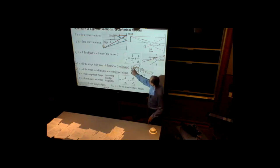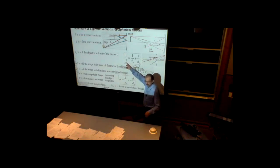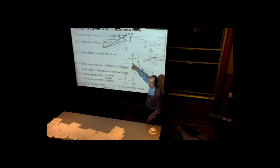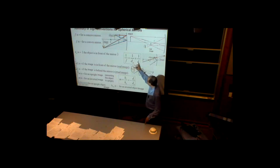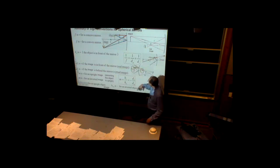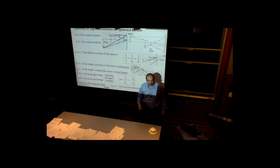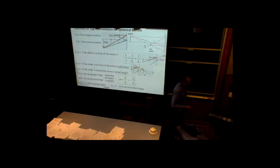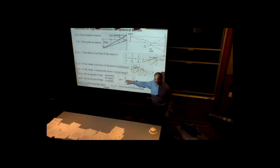This mirror equation works for any type of mirror; we just have to keep an eye on the sign of the values. The focal distance f may be positive or negative depending on the mirror. The object distance is always positive because an object is always real, but the image distance may be positive for a real image or negative for a virtual image. Magnification is the size of the image divided by the size of the object.